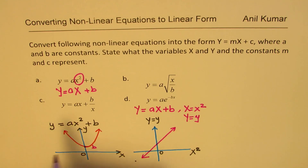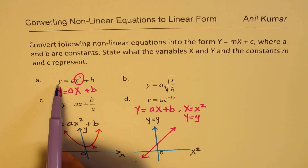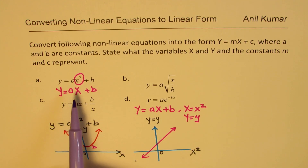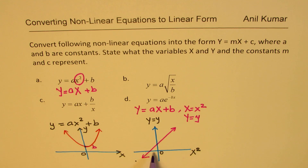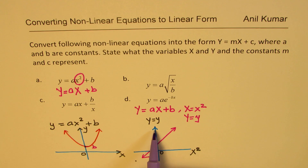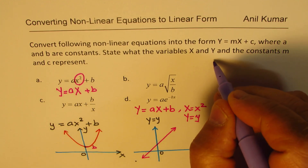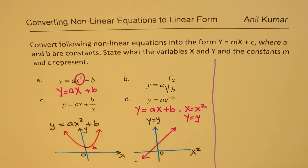With this example I hope the concept is clear. We had a parabolic quadratic equation. If we change the x-coordinate value to x squared instead of x, and keep y on the y-axis, we actually get a straight line. That is what we are going to do with all four equations one by one.